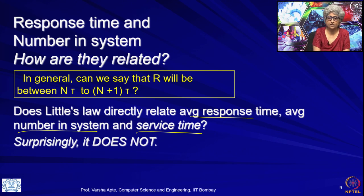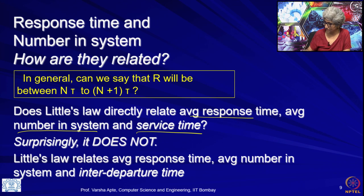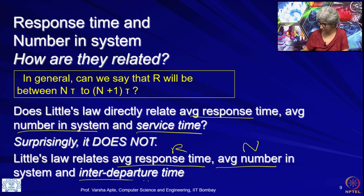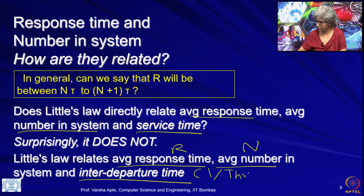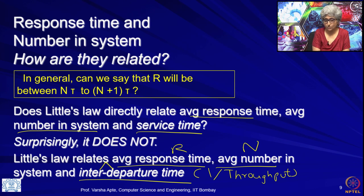It turns out, very surprisingly, it does not do that. This is not the relationship that Little's Law is about. It does relate N and R, but not through the service time. Actually, it relates R and N through the inter-departure time, which in other words is 1 over throughput. So N and R are related through capital lambda by Little's Law.